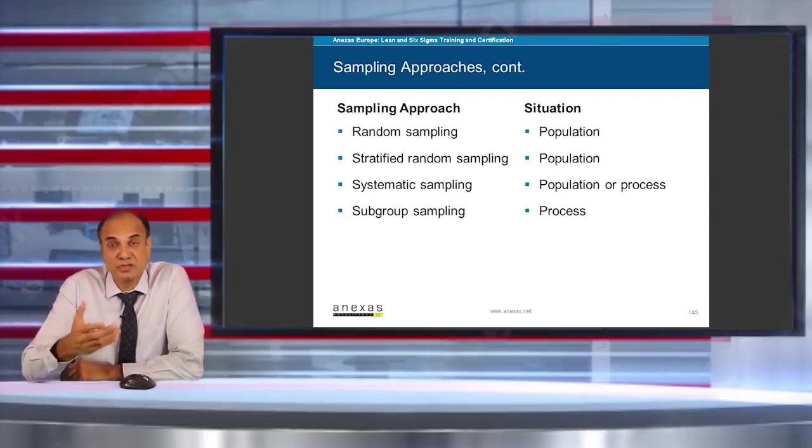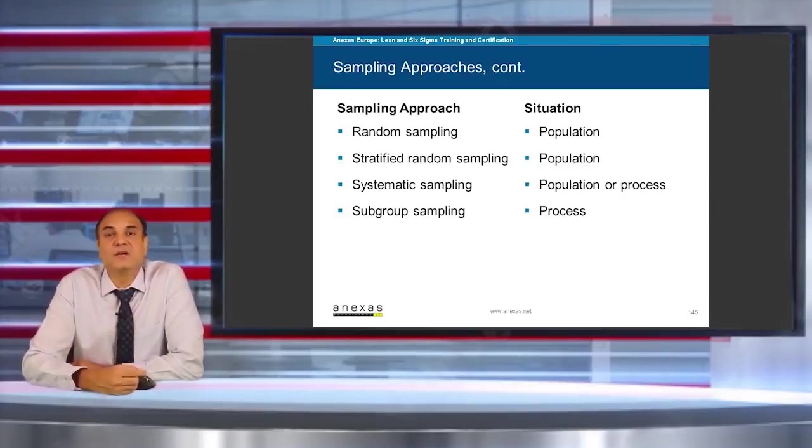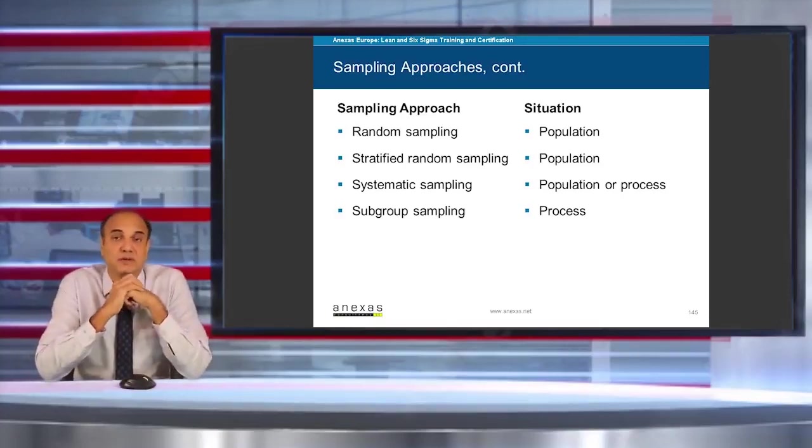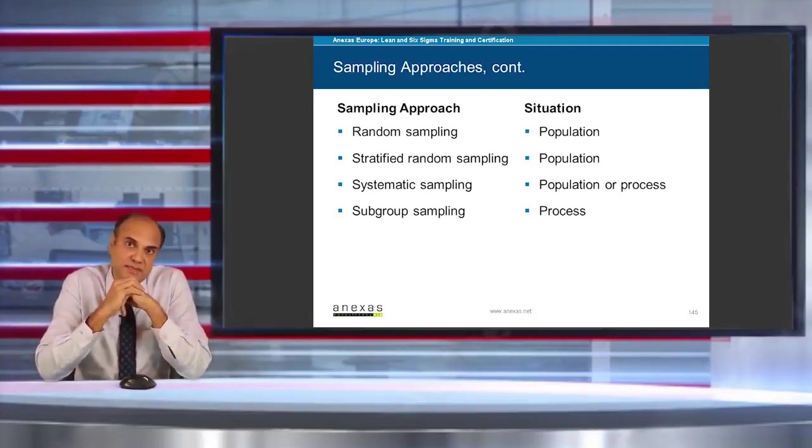Systematic sampling is usually used for population as well as process, and subgroup sampling is for a process, especially if you are manufacturing something in bulk or processing items in bulk. In that case, you will be using subgroup sampling.